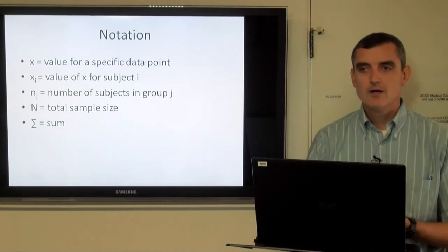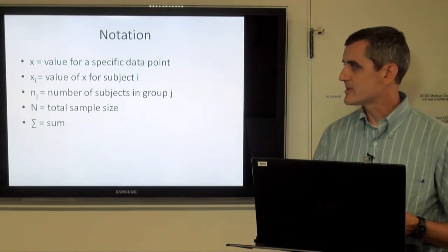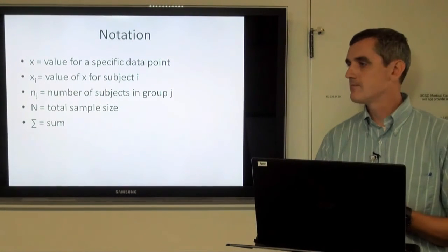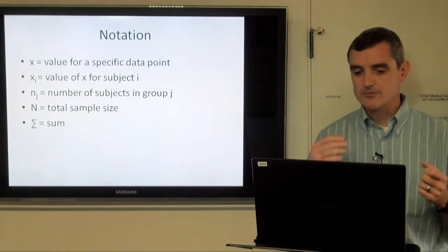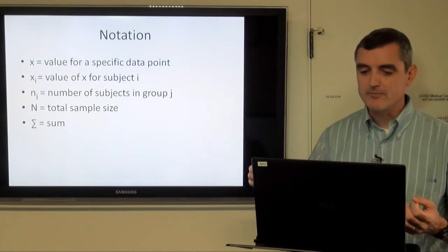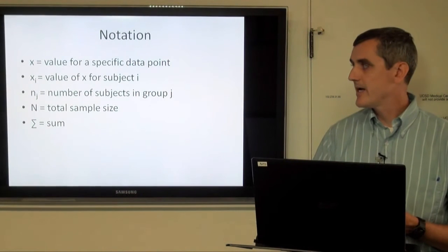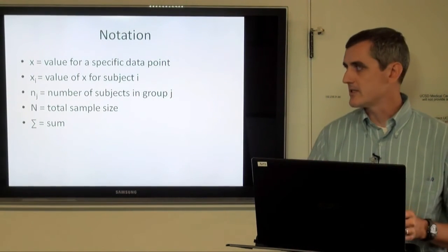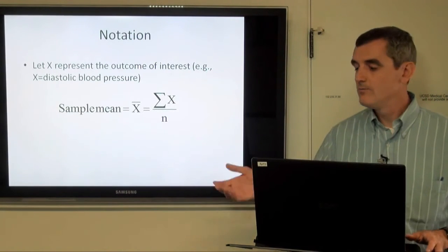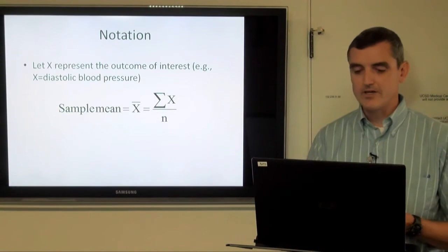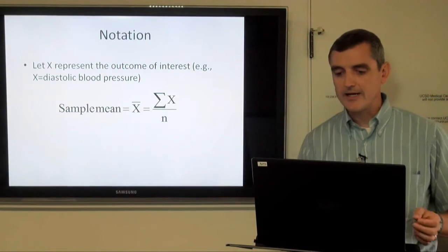Some people get kind of scared about notation, especially where it comes to Greek letters. Capital sigma just means you add everything together. X generally means that's just the value for a specific data point. X sub i means value for subject i. Lowercase n is the number of subjects in a sample. Capital N is the total sample size. The sample mean, X bar, is the sum of all of the observations divided by the sample size.